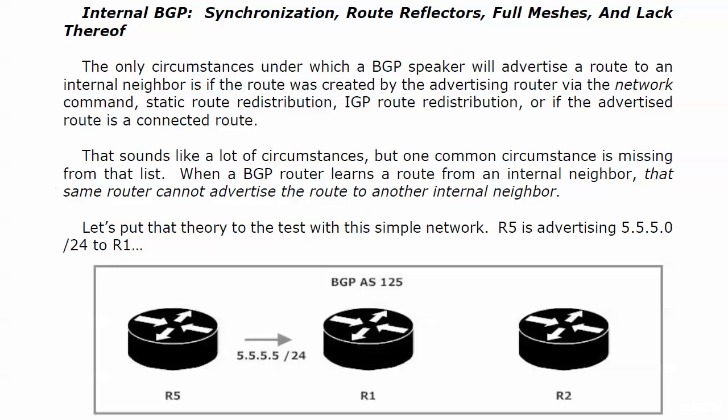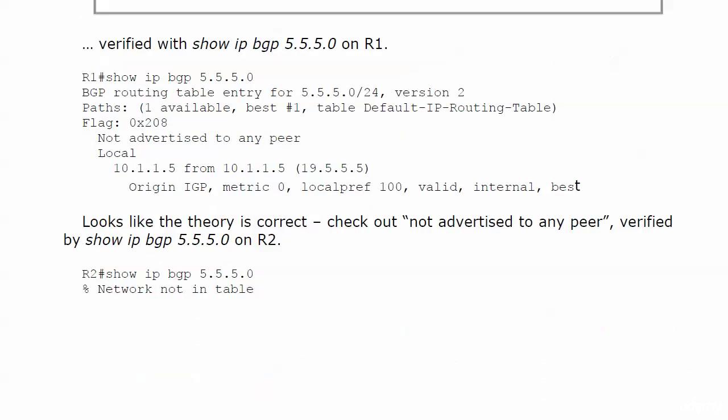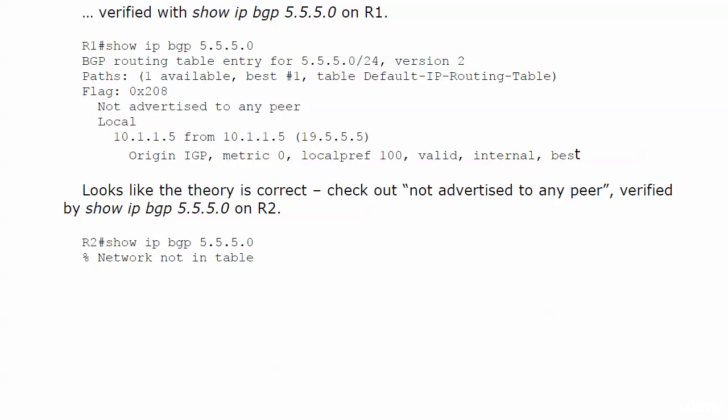I put that theory to the test here by putting routers 1, 2, and 5 in BGP AS125. Router 5 is advertising 5.5.5.0/24, and we verify that with show IP BGP 5.5.5.0 on router 1. And there it is — no problem whatsoever. We see valid, internal, best. Everything's just fine. But check out the phrase: not advertised to any peer.